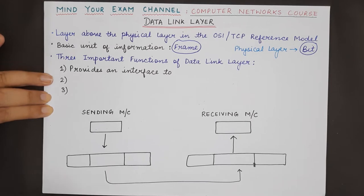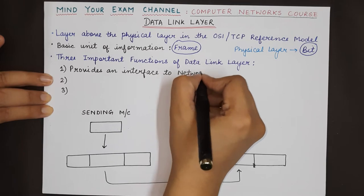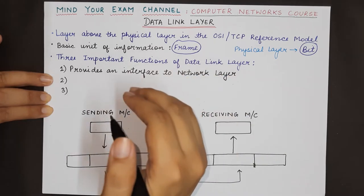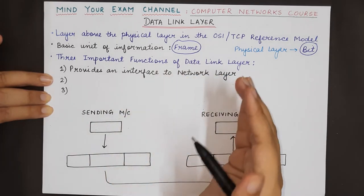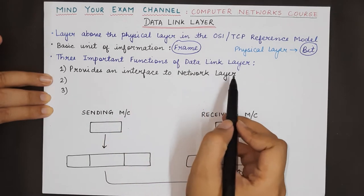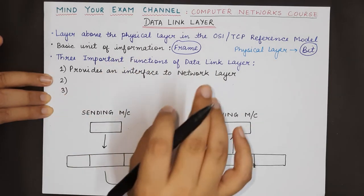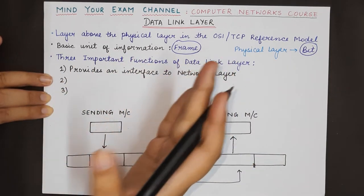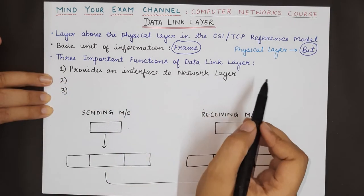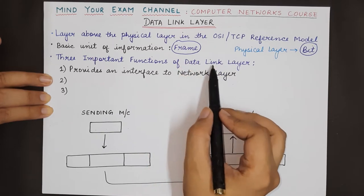The first function is that it provides an interface to the network layer. Whenever we talk about interface, any lower level layer will provide an interface to the higher level layer. The data link layer will provide an interface to the network layer, and the network layer need not worry about how data from the sender side will reach the receiver side network layer.